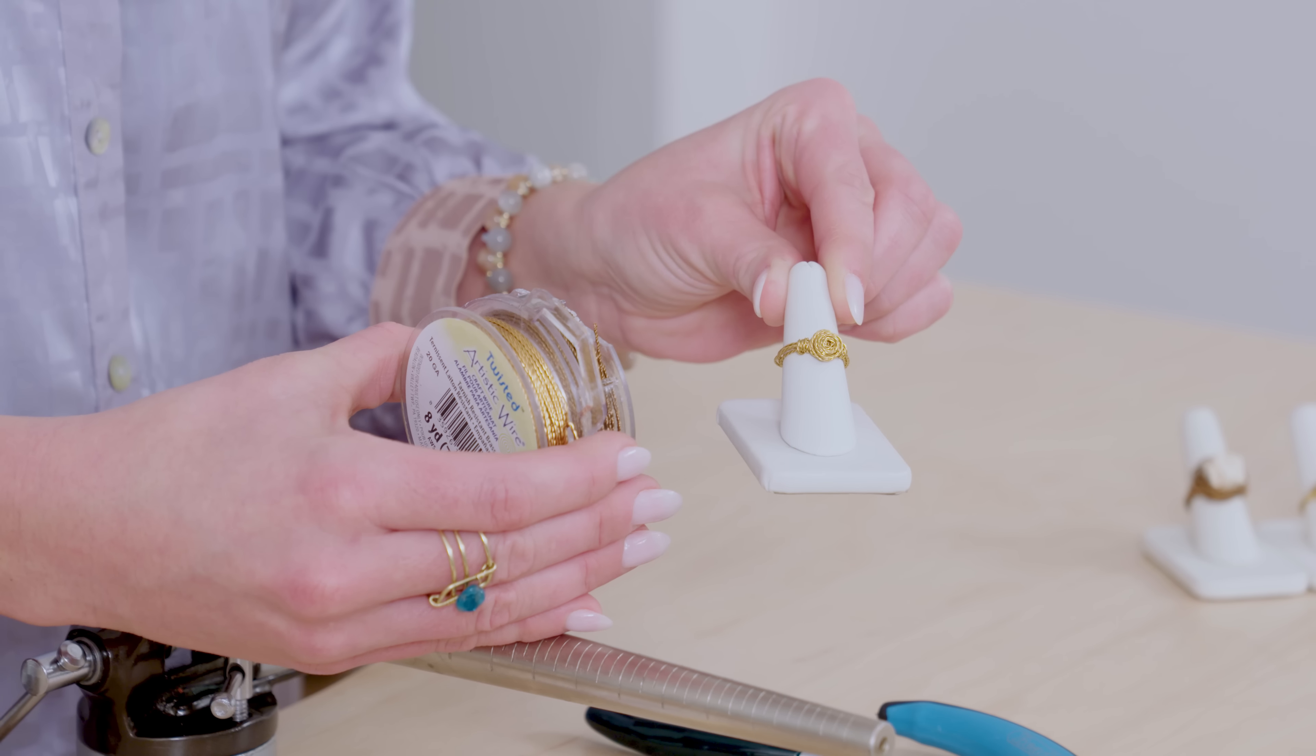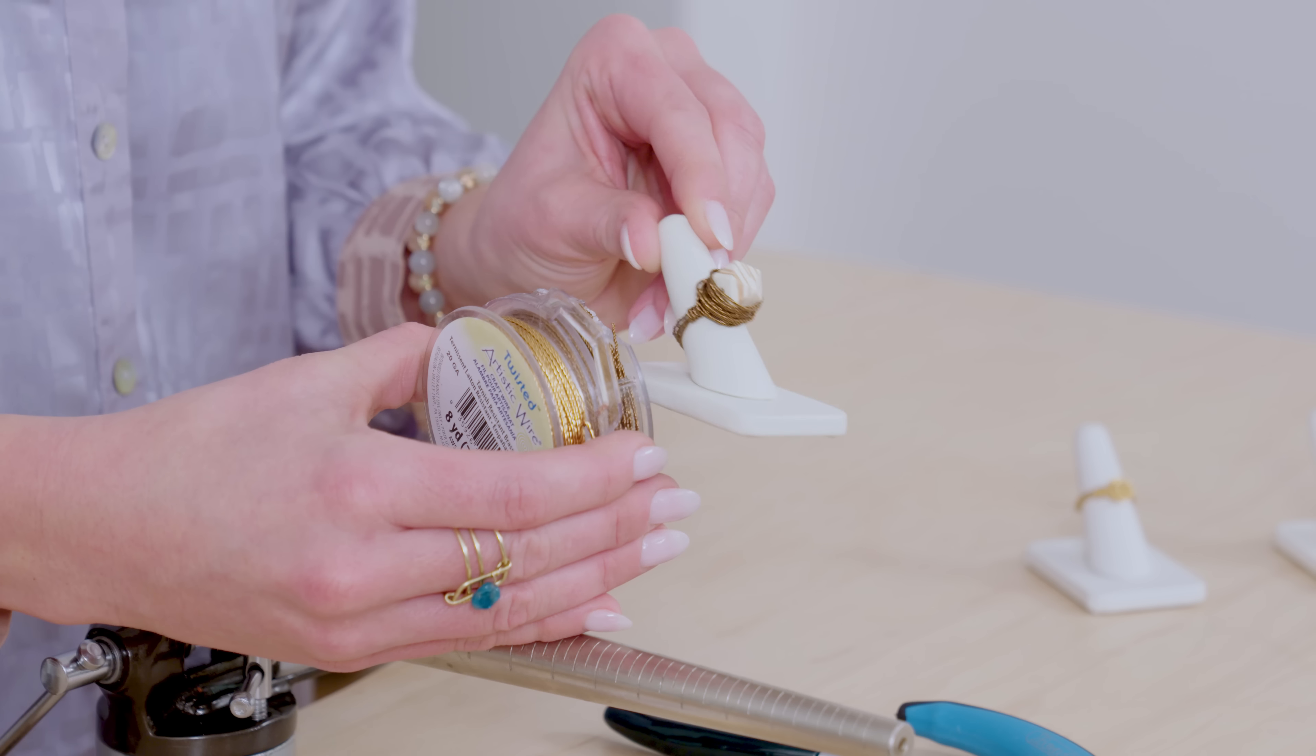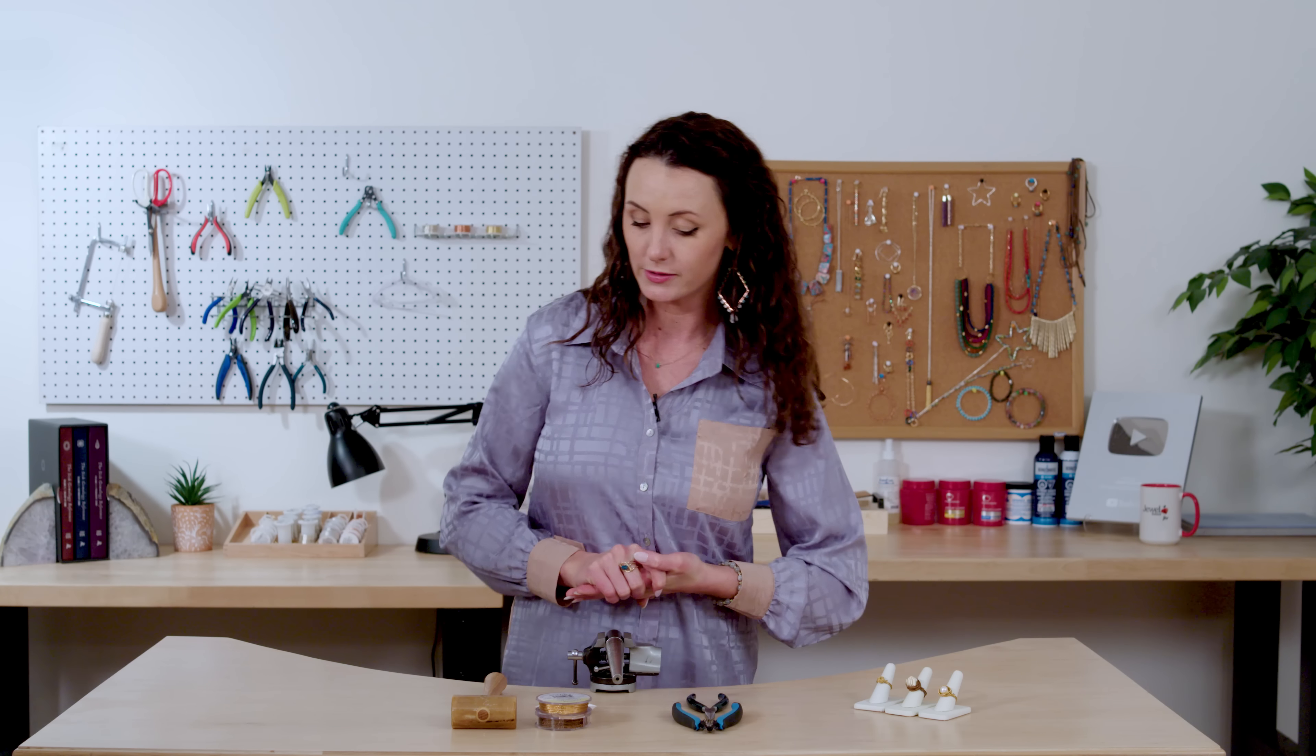It's really soft, it's malleable, and I'm going to show you a couple of different ways that I used it. We're going to do a simple ring with no bead that looks kind of like a little rosette and then we are going to make one with a really interesting wood carved bead too.